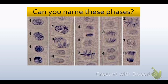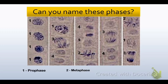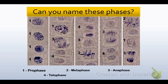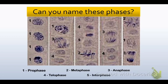Let's see if you can name these phases. The ones are prophases. The twos are metaphases — you can tell because they're all in a line. The threes are anaphases because they are separating. The fours are telophases — you can see the little bubble pinching in, and they almost look like two separate cells. Anything labeled five, acting like a normal cell, would be interphase.